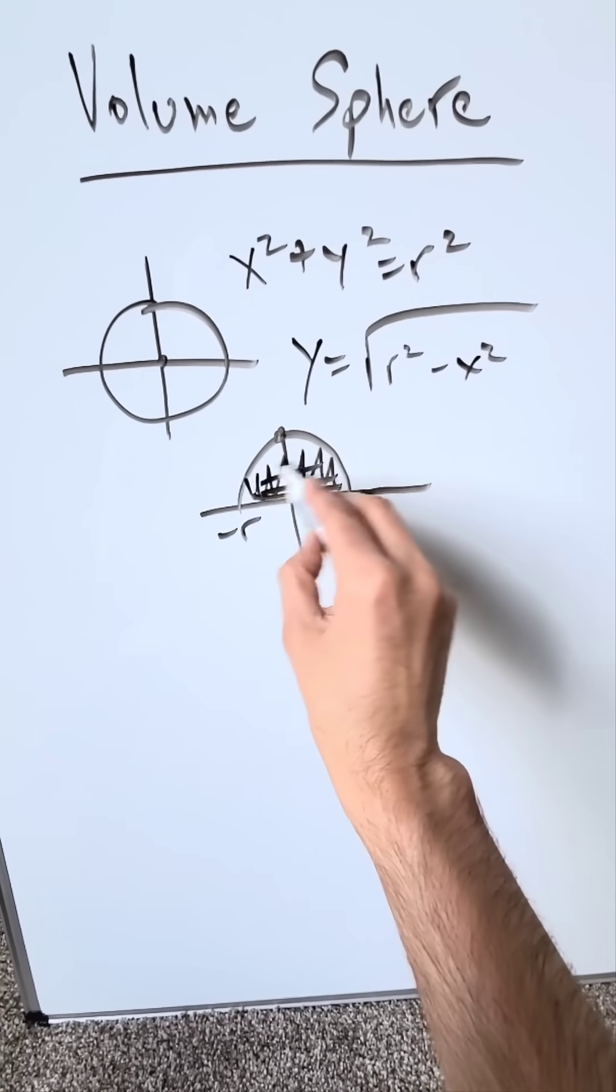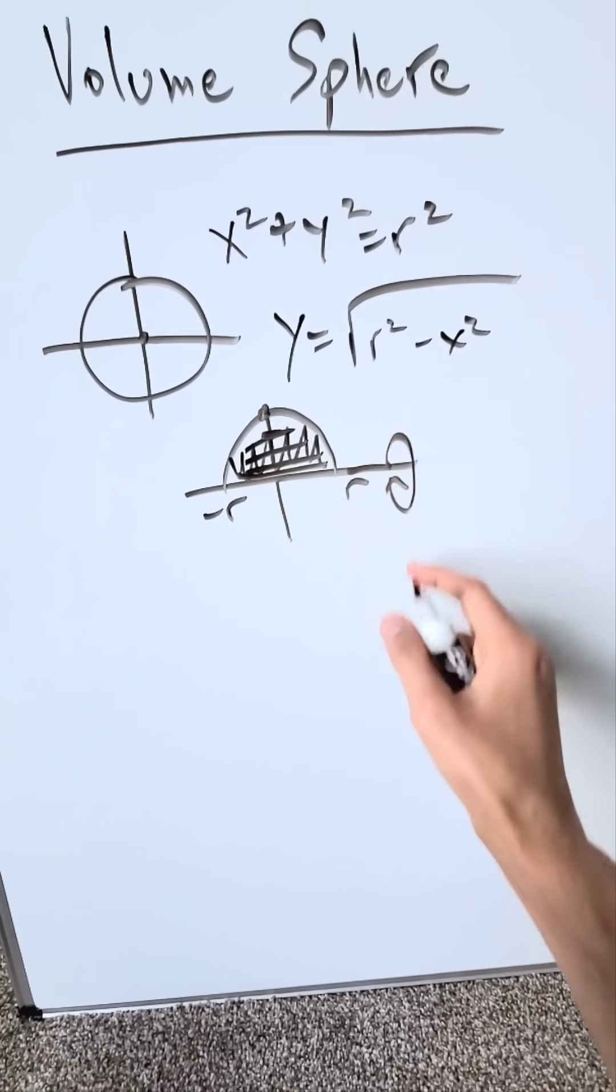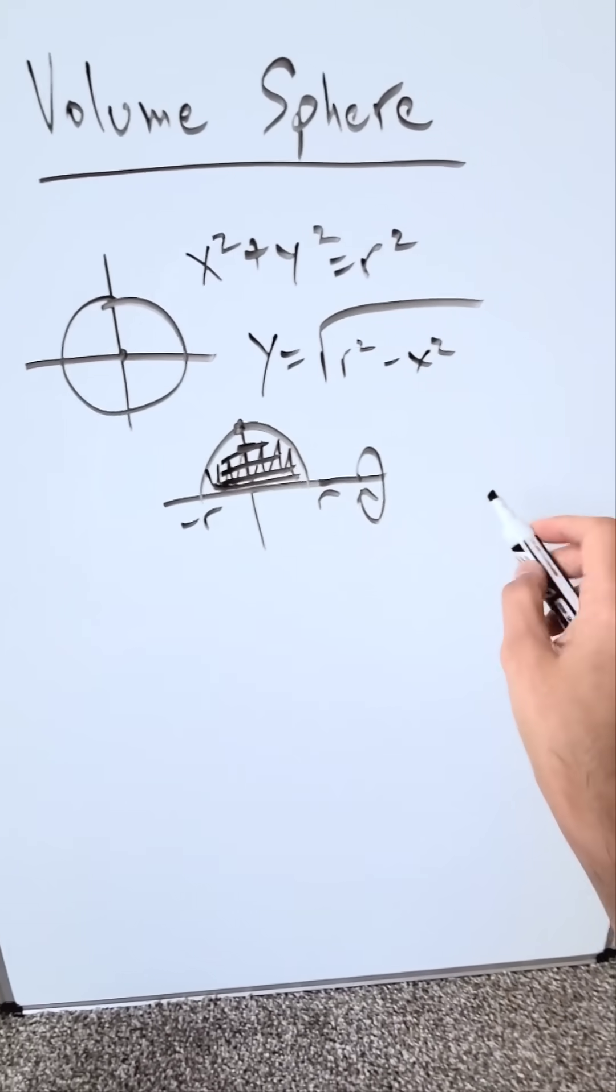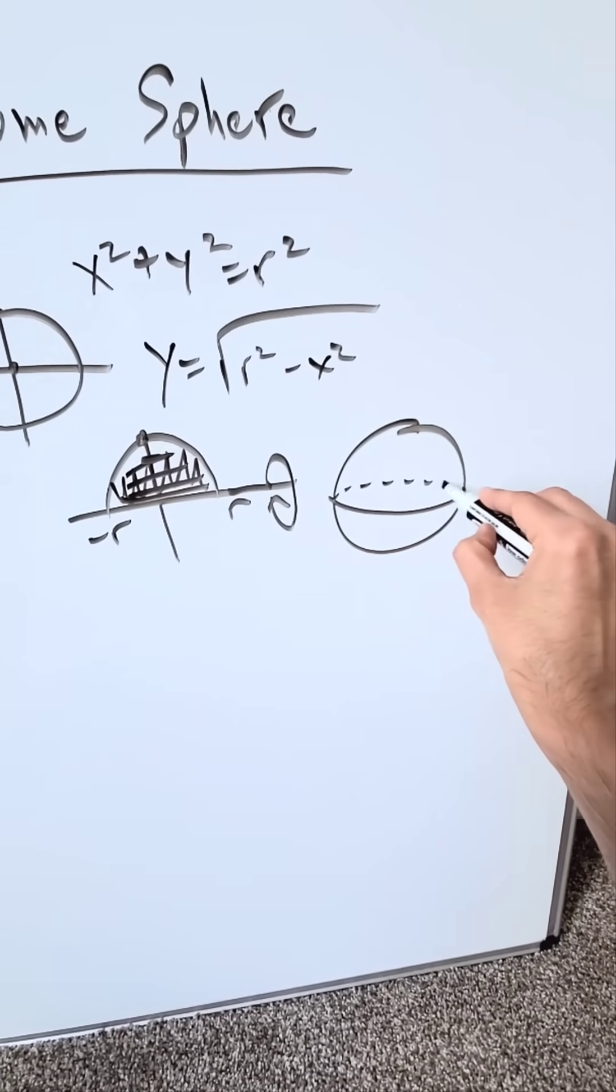If I were to take that shaded region which you see right here and rotate it on the x-axis, this shaded region will develop a three-dimensional solid and that solid will be a sphere and it looks something like this. A relative representation.